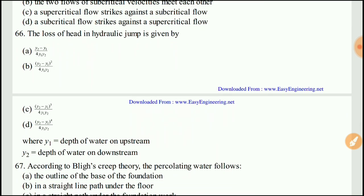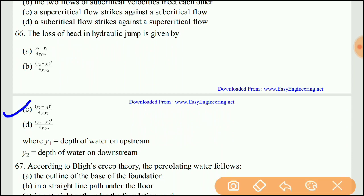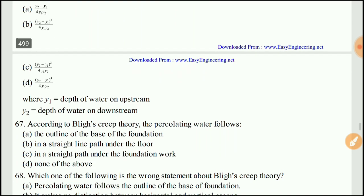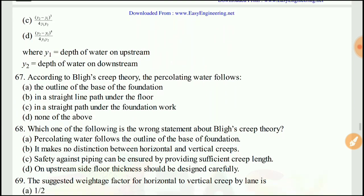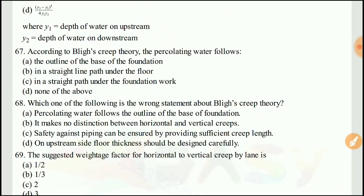Question 66: The loss of head in a hydraulic jump is given by — this is a very important question. The right answer is C: (Y2 − Y1)³ divided by 4·Y1·Y2.